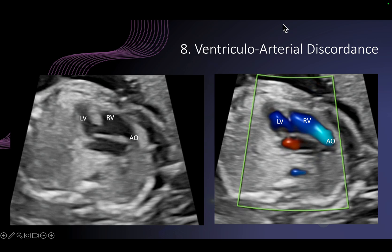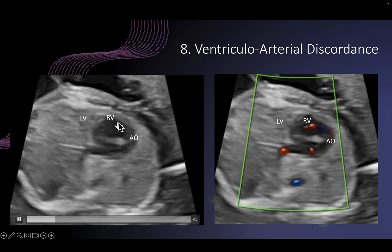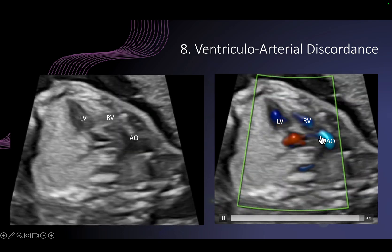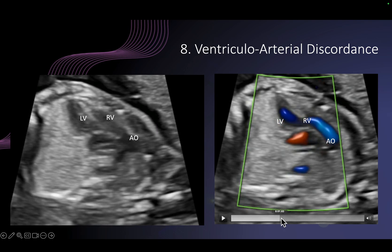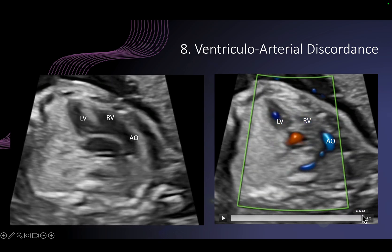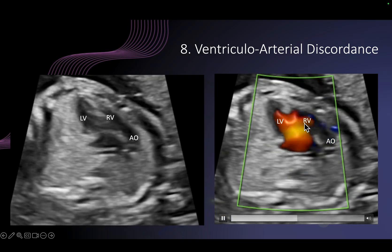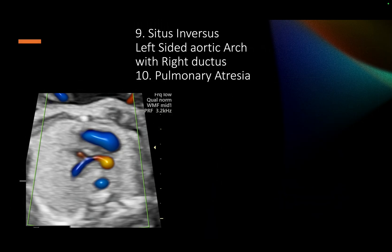The next step in the segmental sequential approach is to see the arterial relations and arterial connections. This is the left ventricle, this is the right ventricle, and you notice the large artery coming out of the right ventricle — this large artery is the aorta, which arches forward. As we scroll forward, you see this aorta going right from the right ventricle, arching cranially. Here is a large VSD which is the exit of the left ventricle. So the aorta was arising from the right ventricle.